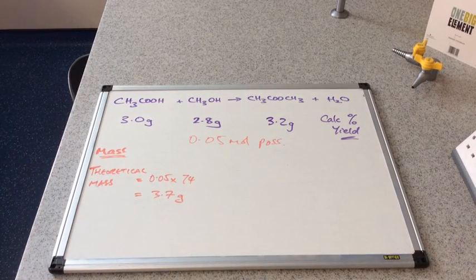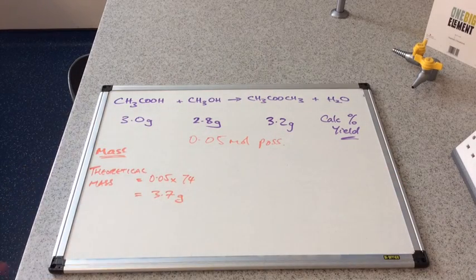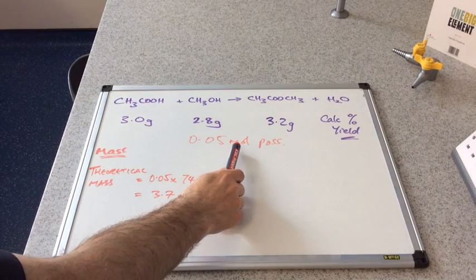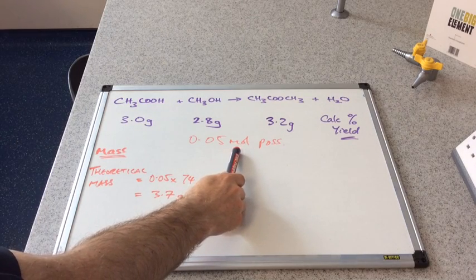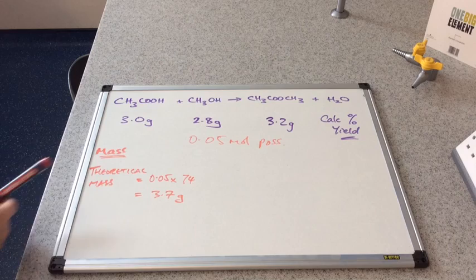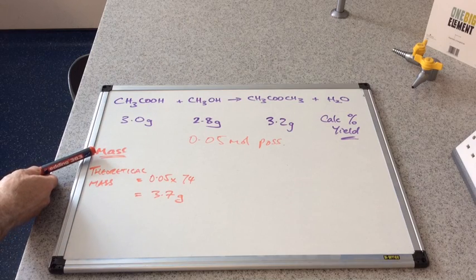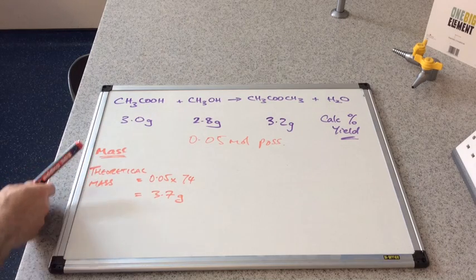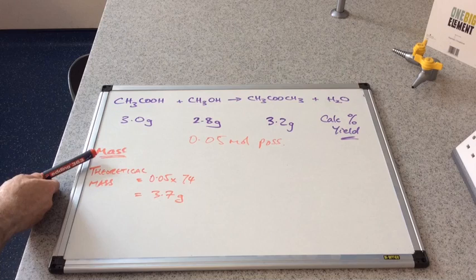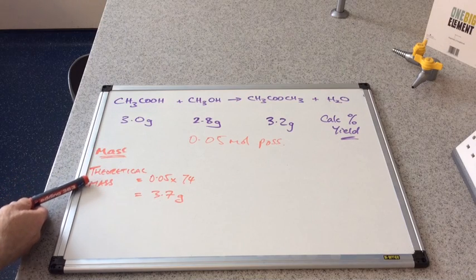We've got two choices at this point. We've just worked out that the maximum possible moles of product is 0.05. We can go down the mass route. I'll show you that first.